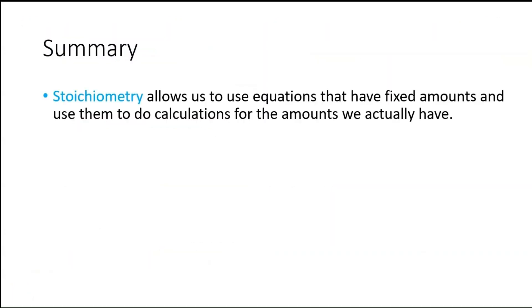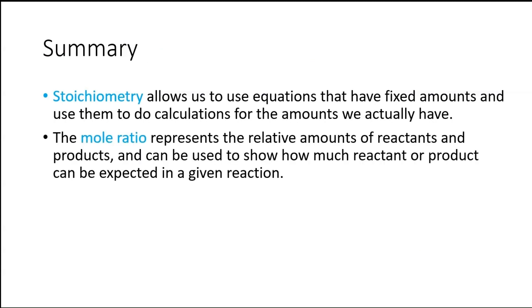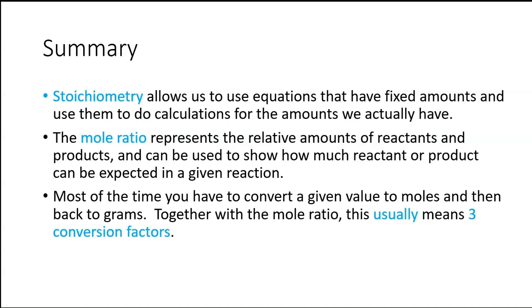To summarize, stoichiometry allows us to use equations that have fixed amounts and use them to do calculations for the amounts we actually have. The mole ratio, which is just extremely important, represents the relative amounts of reactants and products and can be used to show how much reactant or product can be expected in a given reaction. Most of the time, you have to convert a given value to moles and then back into grams, or to some other unit, but most of the time it's grams.